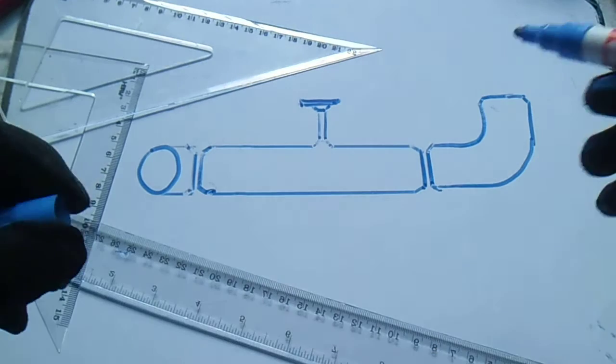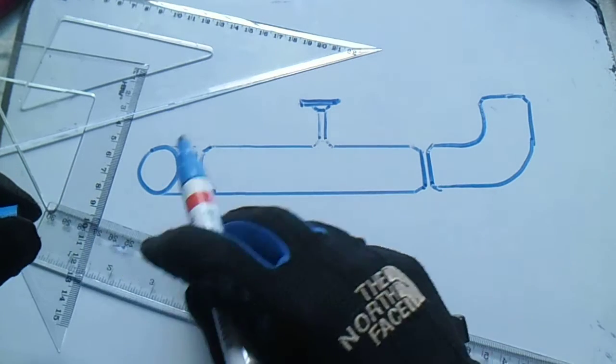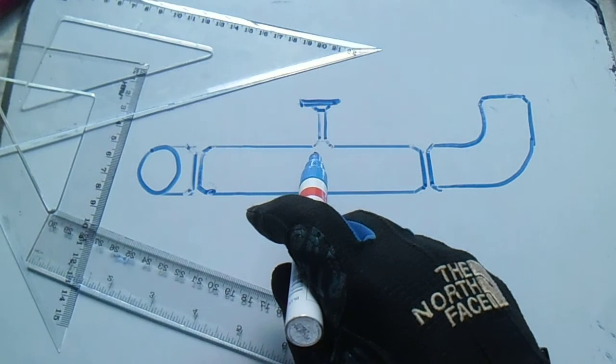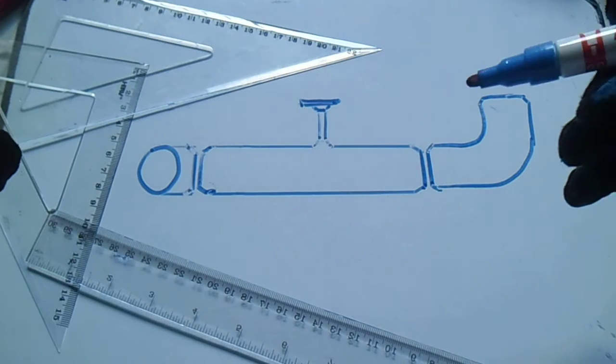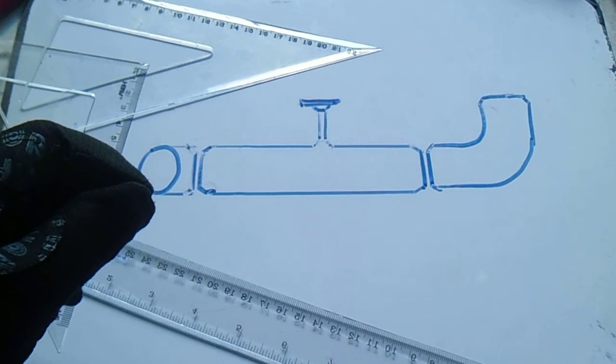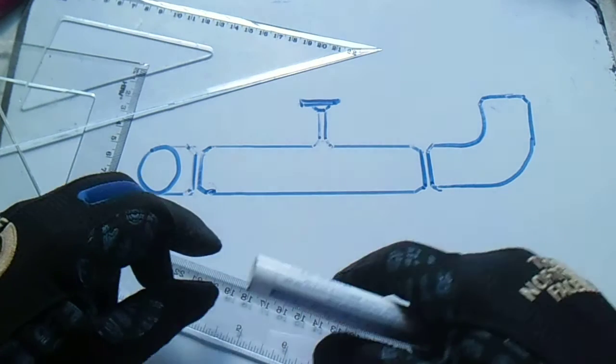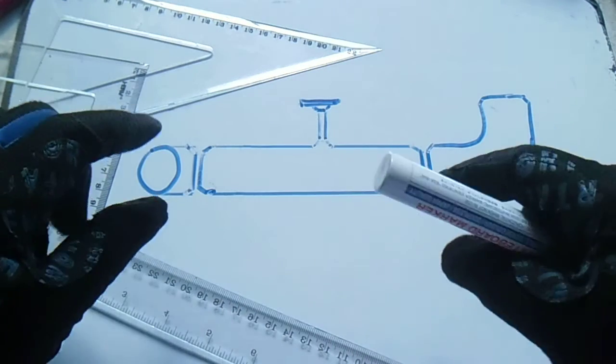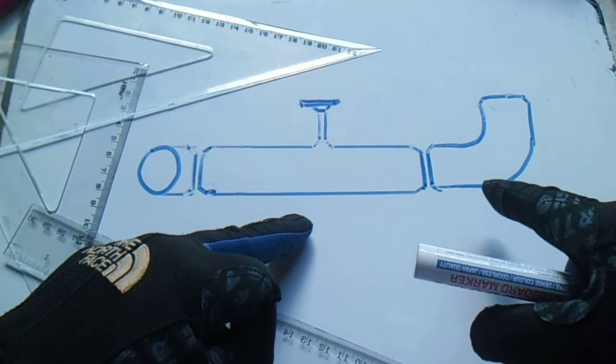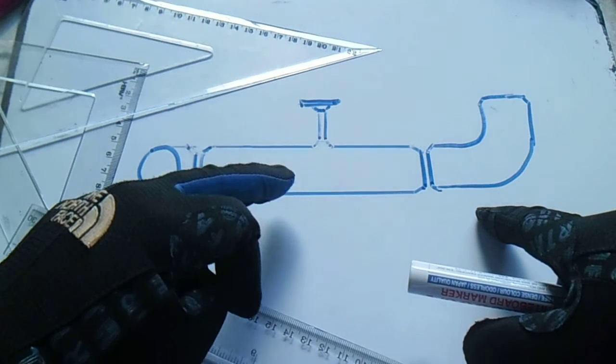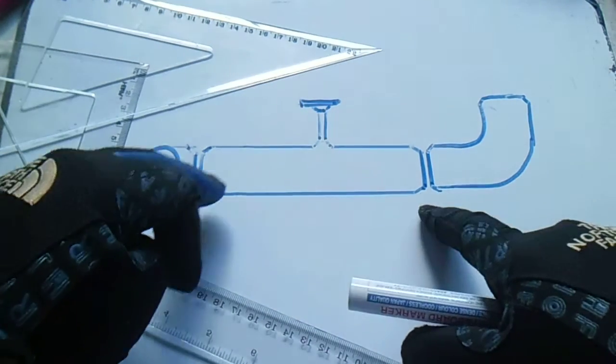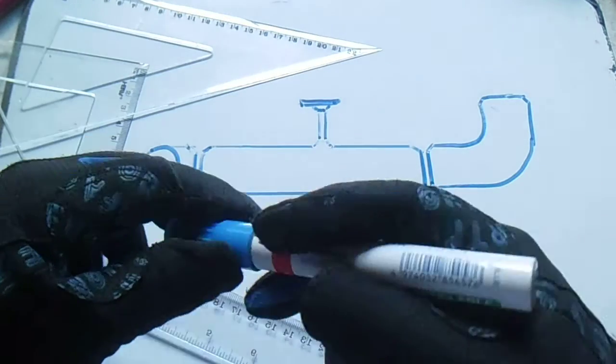We have one, two, three fittings: a weld neck flange and an outlet or weld outlet. So how to align this pipe and first how to fit up this pipe and elbow. We have one, two, three, four, five joints total.